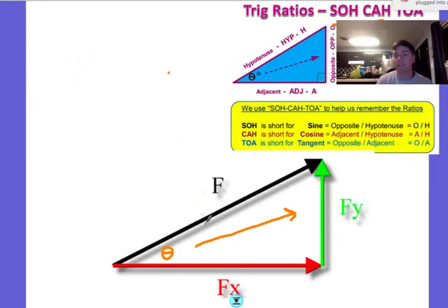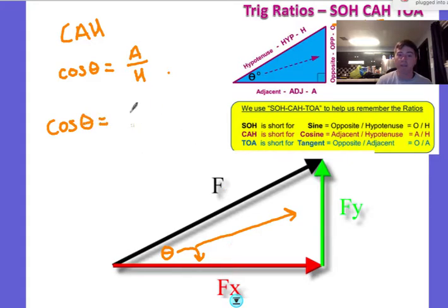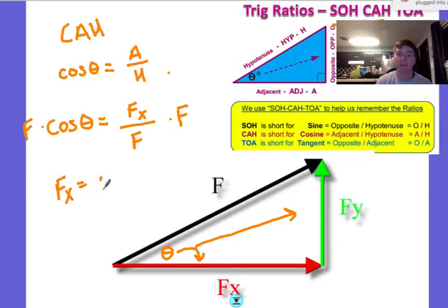Similarly, to find F_x, that is the adjacent side. Cosine of the angle equals adjacent over hypotenuse, so cosine of theta equals F_x over F. Multiplying both sides by F, F_x equals F times cosine of theta — the force magnitude times the cosine of the angle.